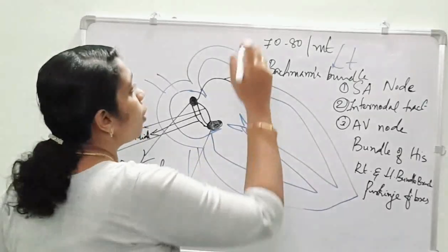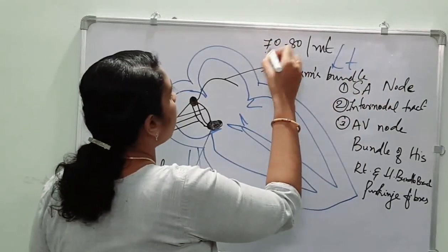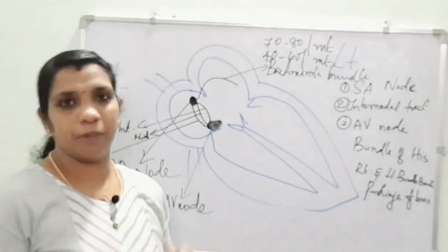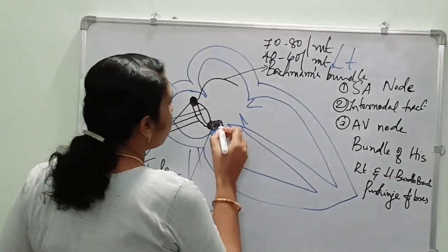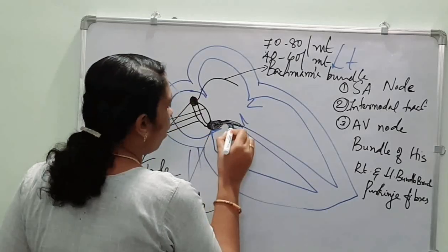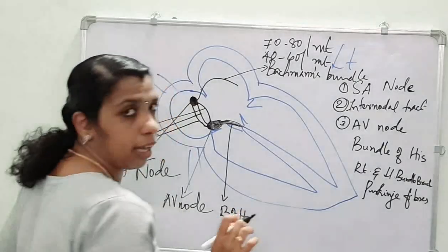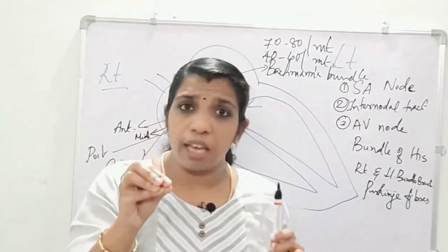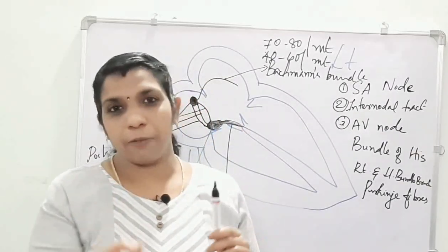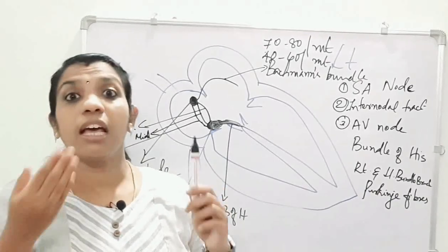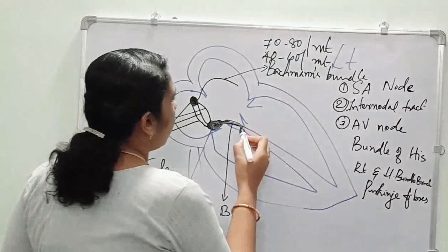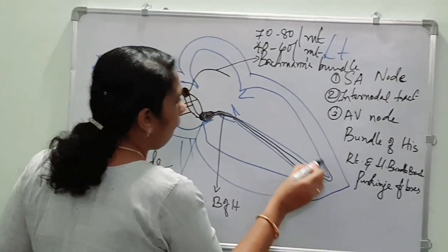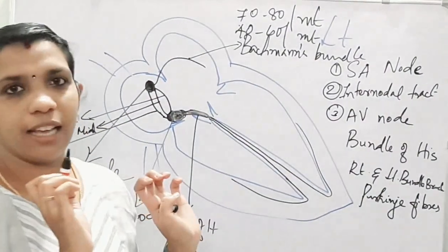The AV node is capable of producing impulses at 40 to 60 per minute. From the AV node arises the bundle of His. This bundle of His is a tract which arises from the AV node, and after traveling some distance it divides into the right and left bundle branch.